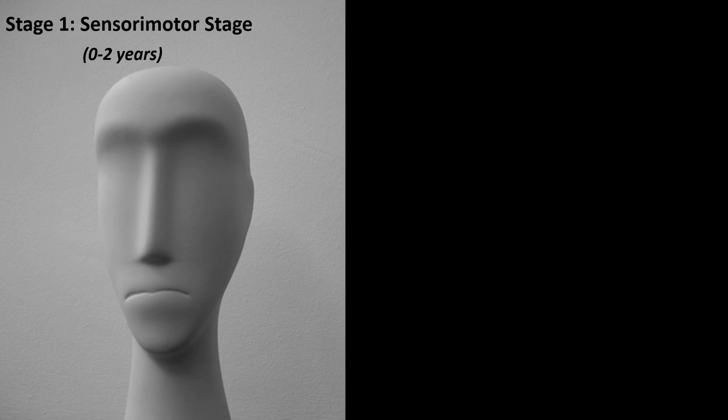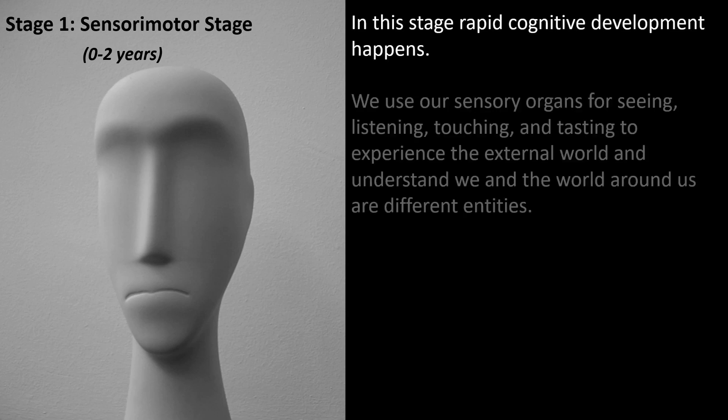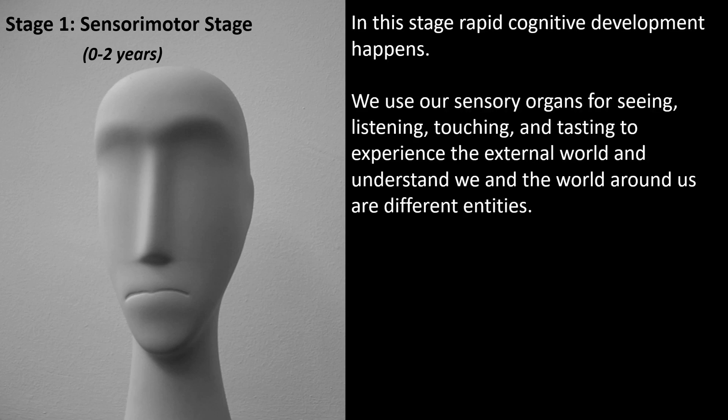The first stage of Piaget's theory of cognitive development is called the sensorimotor stage. As per Piaget, this stage extends from zero to two years of our development. In this stage, rapid cognitive development happens. We use our sensory organs for seeing, listening, touching, and tasting to experience the external world and understand we and the world around us are different entities.